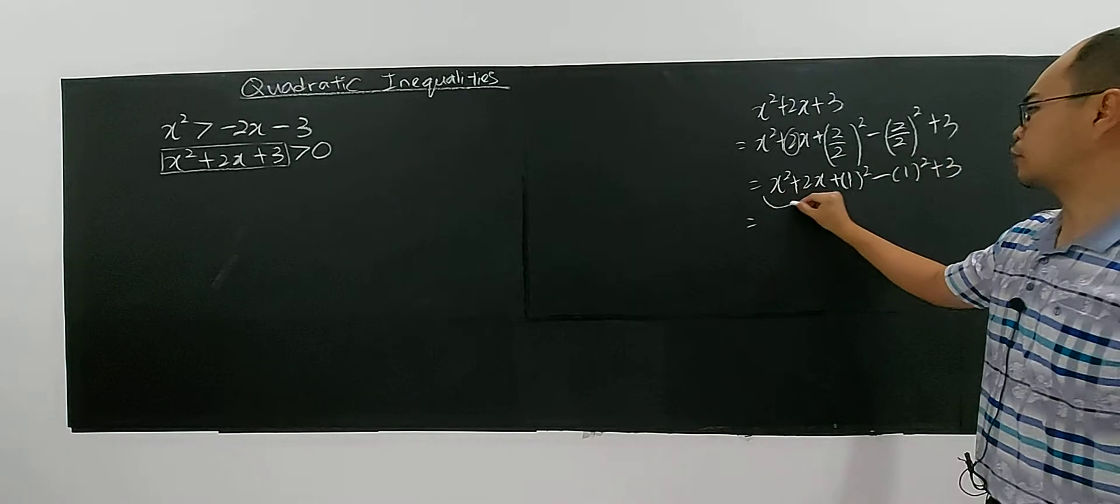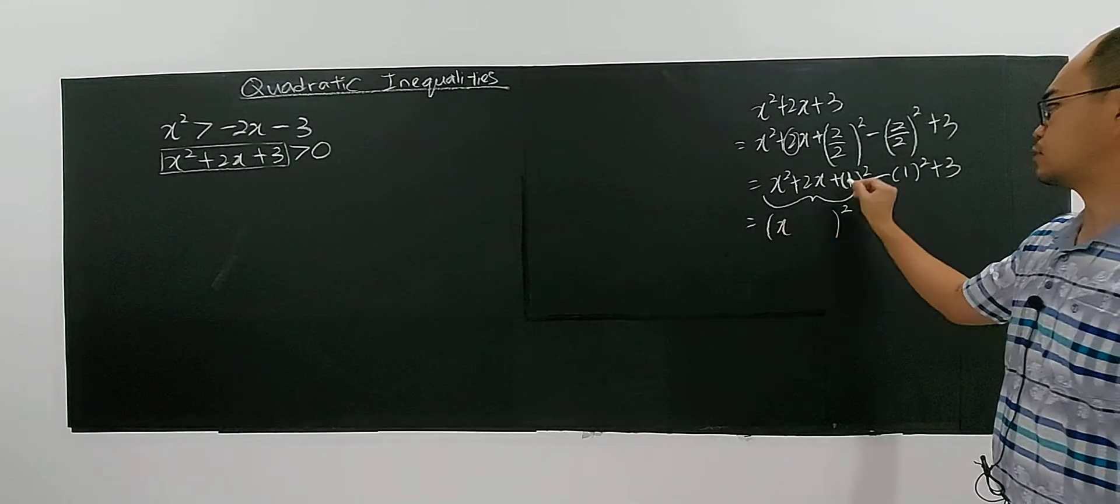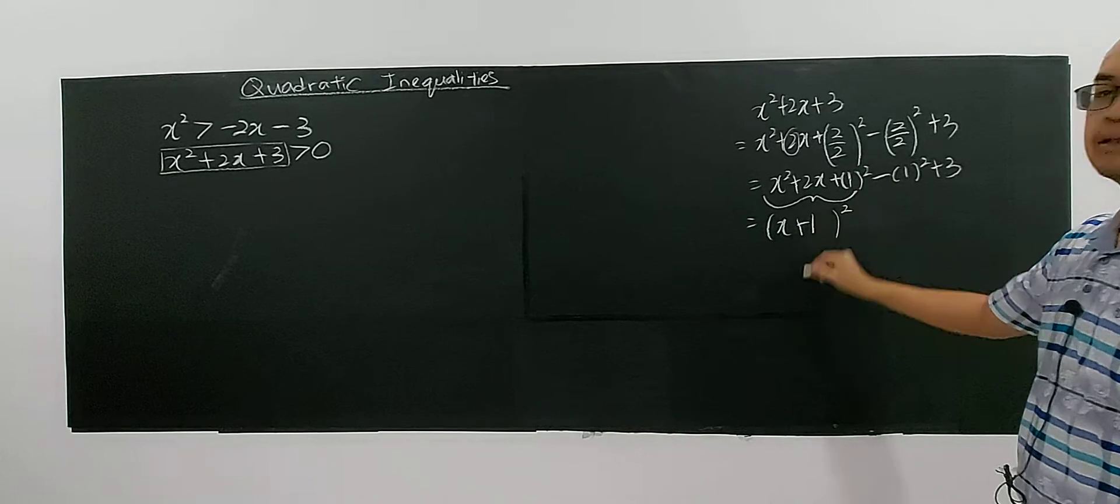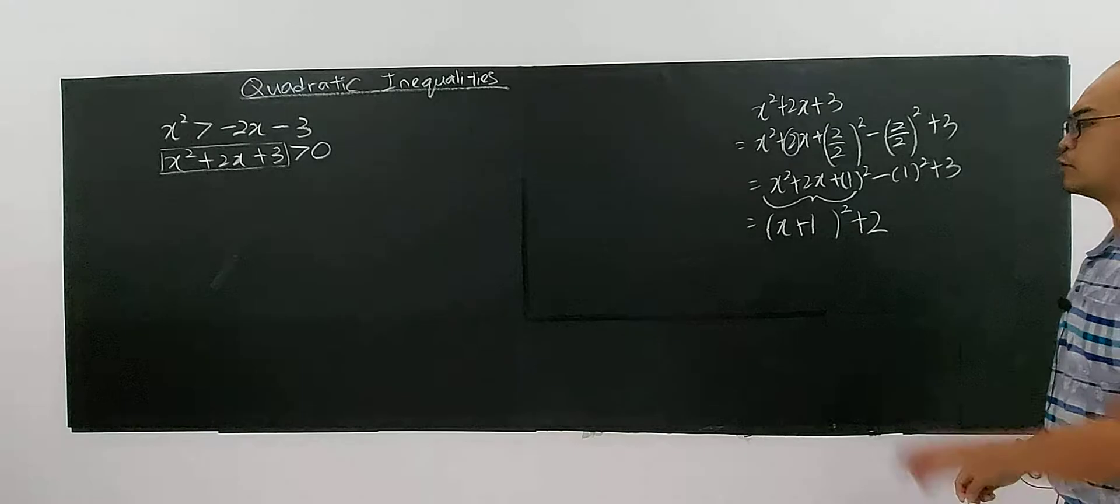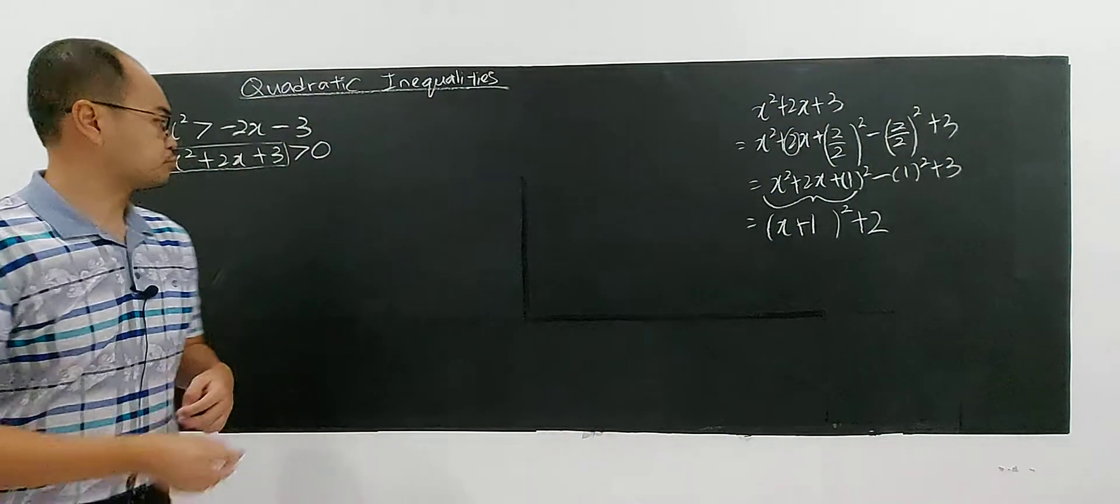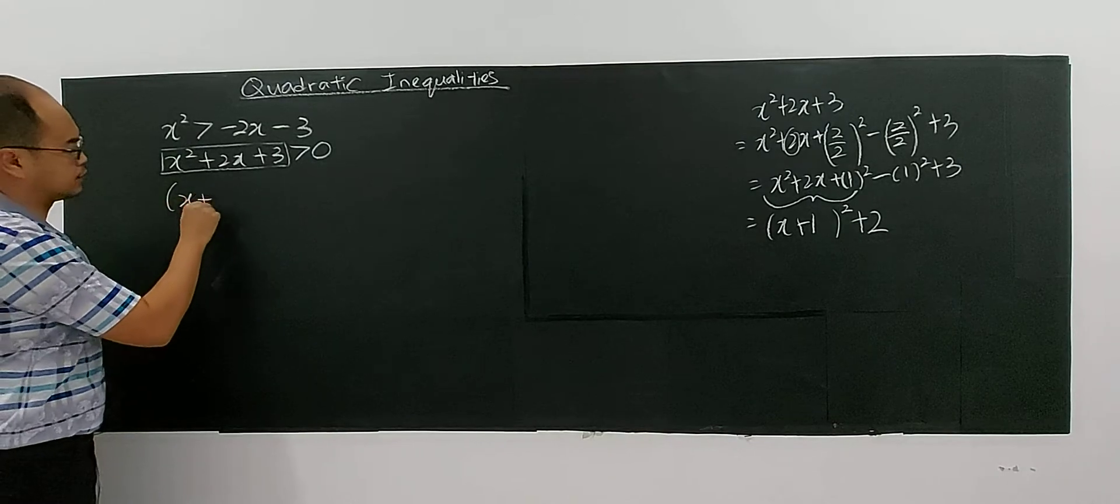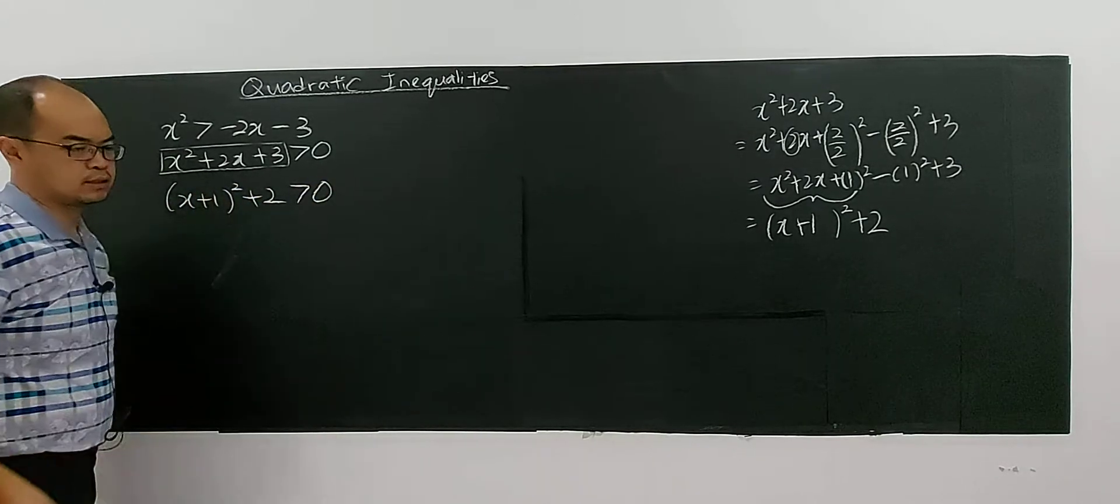You have to write this in a complete square. The x, the 1 here, you will put positive 1 here. And this one with negative 1 plus 3, you have positive 2. Then you will see that (x + 1)² + 2. How to solve this type of inequality?